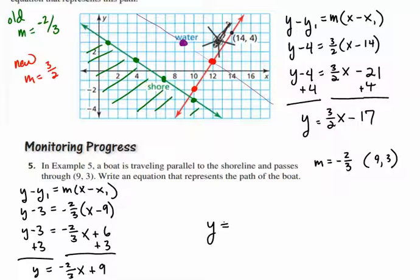So, the equation of the boat that is sailing parallel to the shoreline would be y is equal to negative 2 thirds x plus 9. Now, we know it's parallel because the shoreline has a slope of negative 2 thirds.